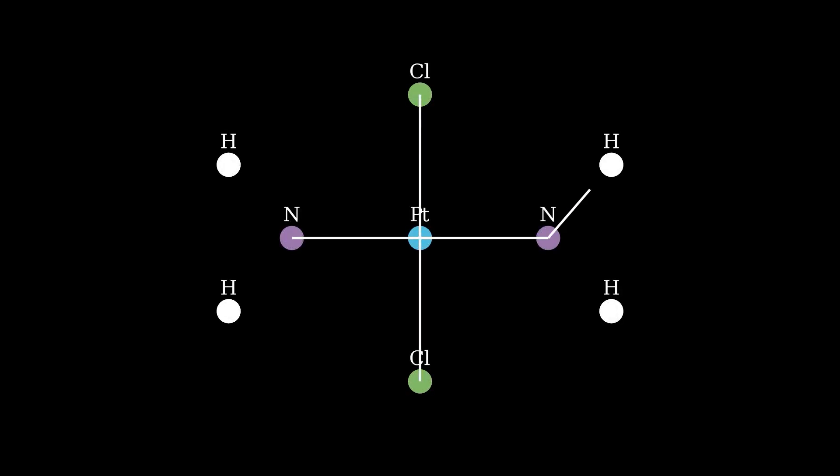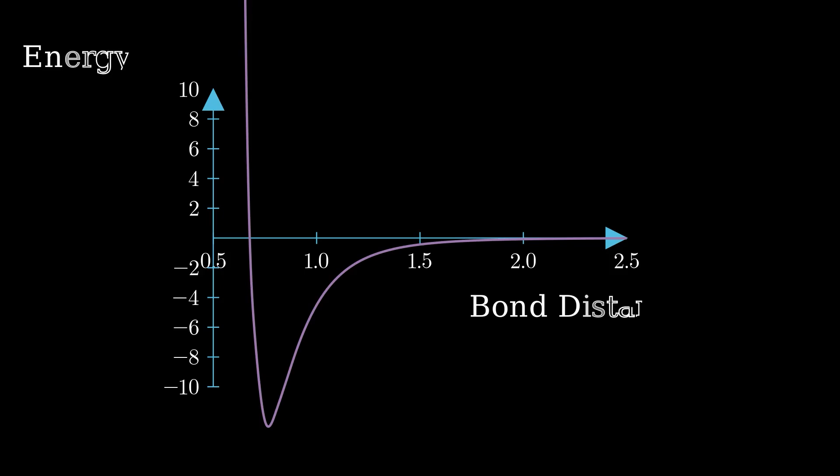By iterating over different geometric parameters of our molecule, such as bond distance or angles, and applying the simulation at each step, we can calculate the energy associated with each configuration. Sometimes this is called a potential energy surface.